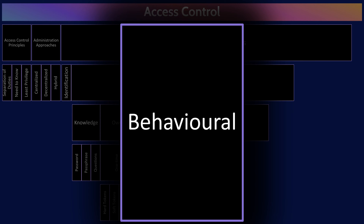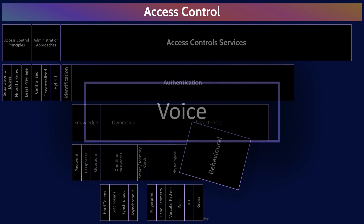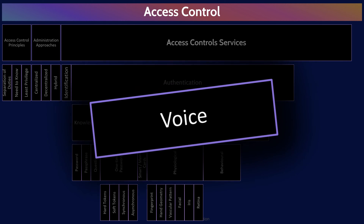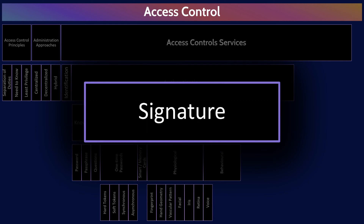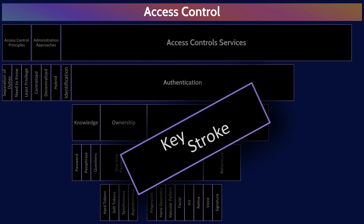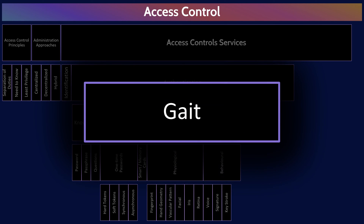Behavioral characteristics are how we act — how we do certain things like speak, type, and walk. Voice systems analyze the way we speak, the minutiae of our voices. Signature systems look at how we write, how we sign our name for example. Keystroke dynamic systems look at how we type — characteristics such as dwell and flight time, whether we use the left or right shift keys. And gait dynamics look at how we walk.